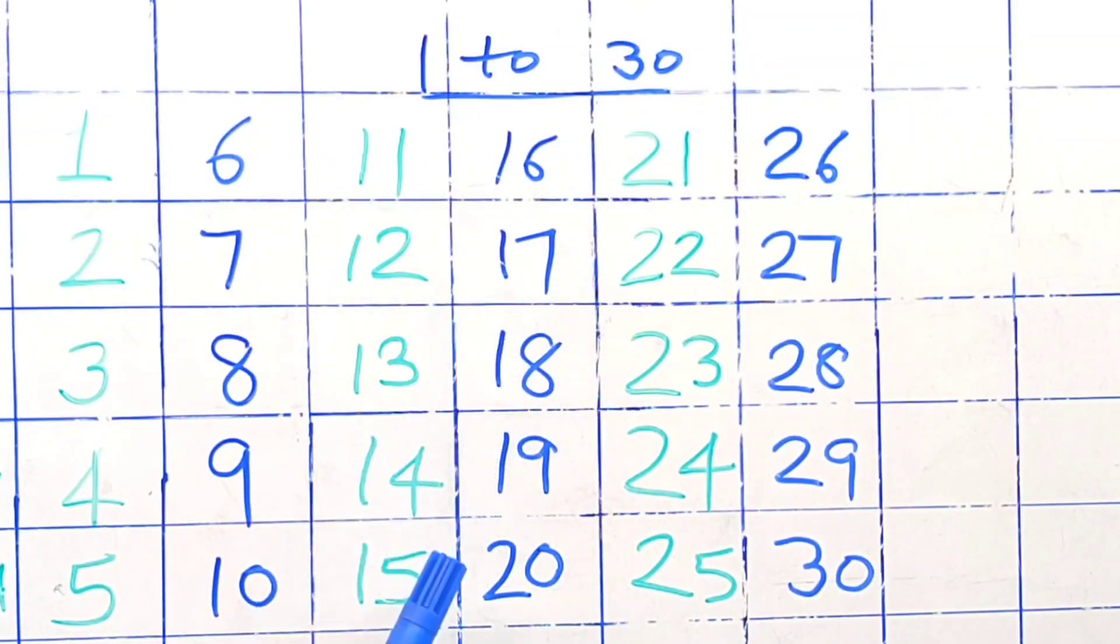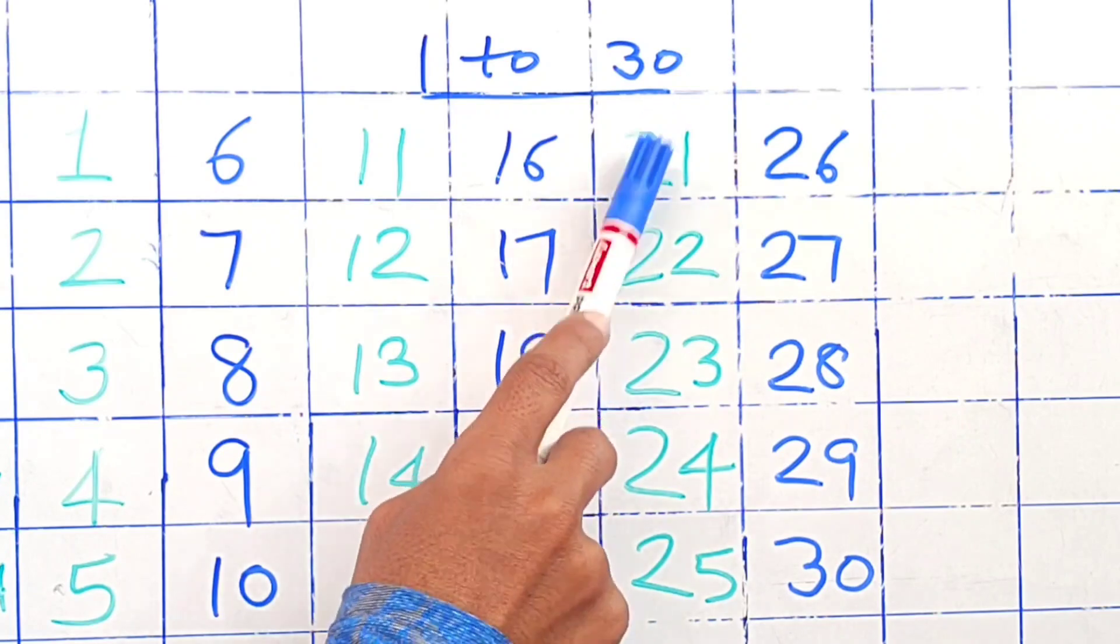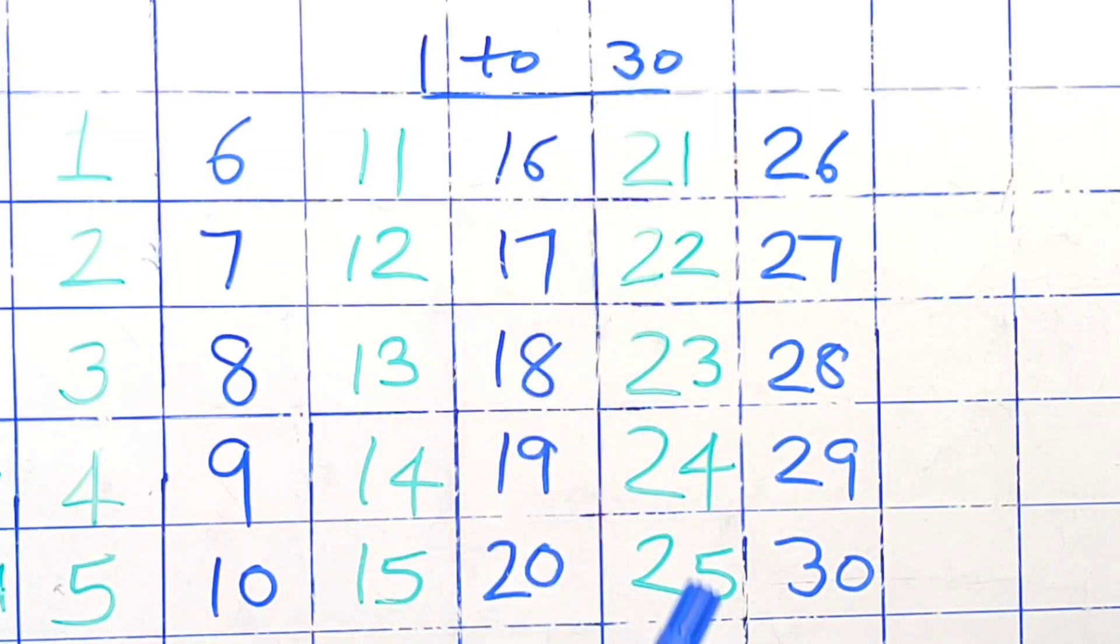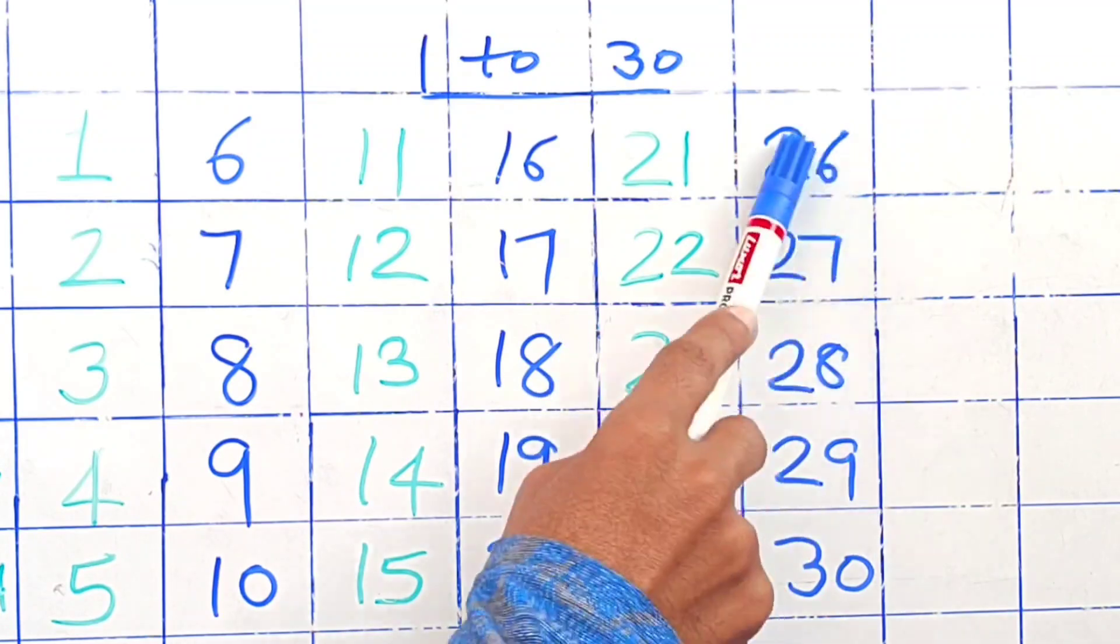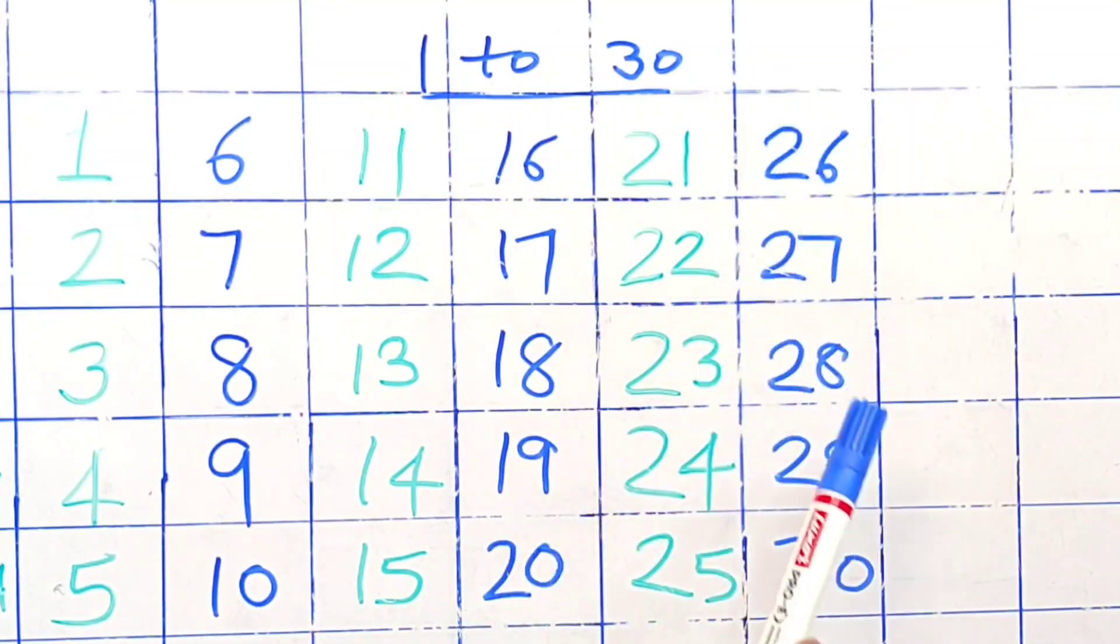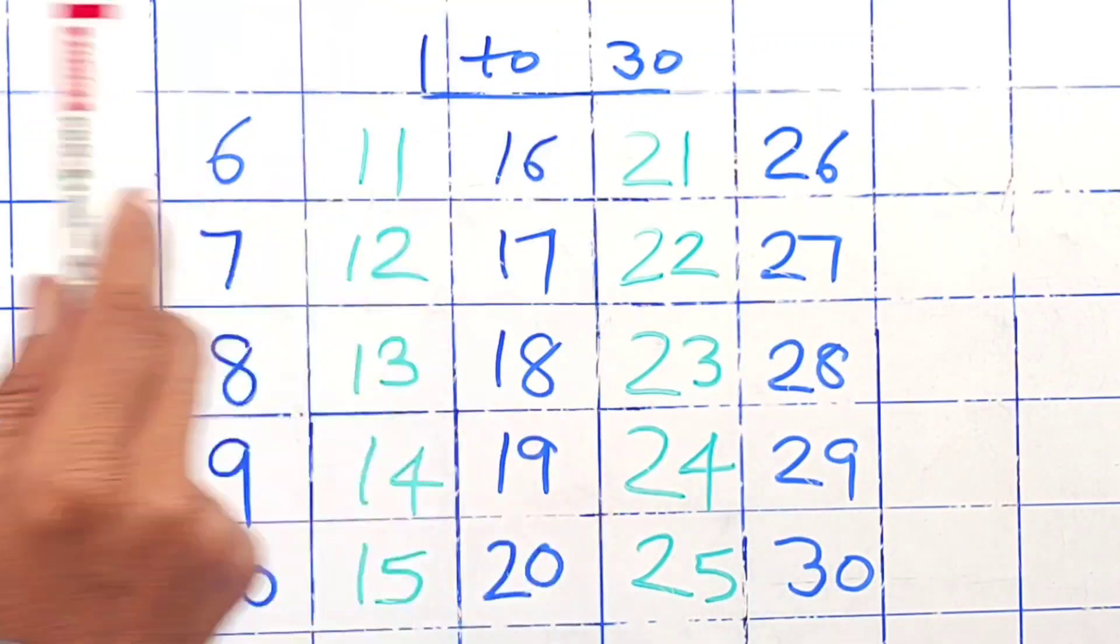18, 19, 20, 21, 22, 23, 24, 25, 26, 27, 28, 29.